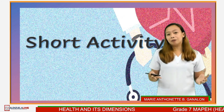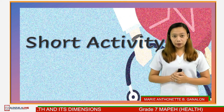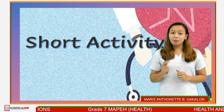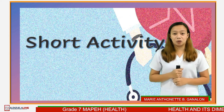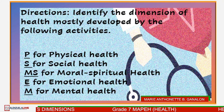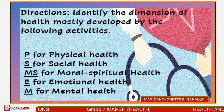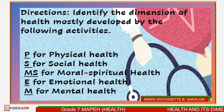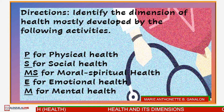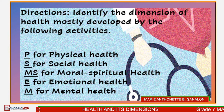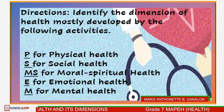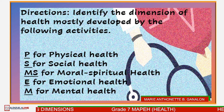Let's see how far you understood our lesson for today with this short activity. The health dimensions are interrelated; however, some activities develop a specific dimension more than others. For the directions, identify the dimension of health mostly developed by the following activities and comment the corresponding letter of your answer below: P for physical health, S for social health, MS for moral spiritual health, E for emotional health, and M for mental health.